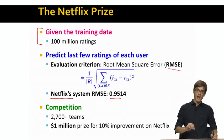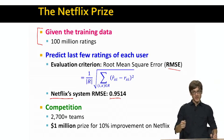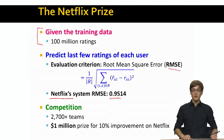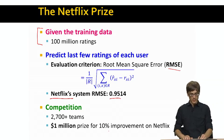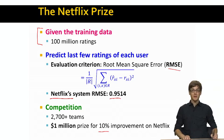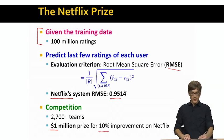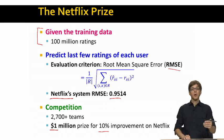On average, this in-house recommender system was about one star away from the true rating. This competition took place in 2009 and 2010, and more than 2,700 teams joined. Netflix said that whoever is able to improve their in-house recommender system by 10% gets the $1 million prize. The idea is how can we beat the in-house system and get the root mean squared error from 0.95 down to 0.85?